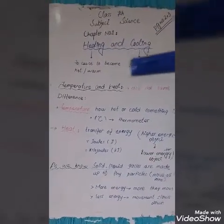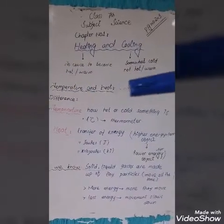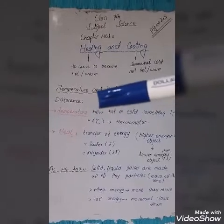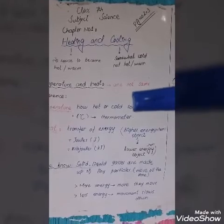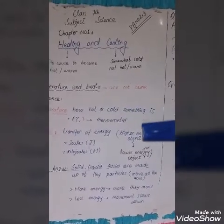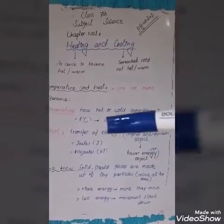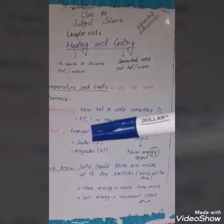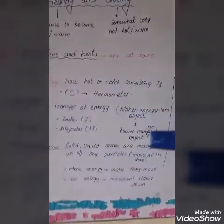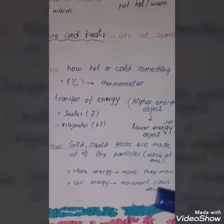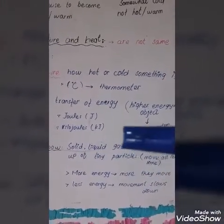Temperature is how hot or cold something is. It is measured in degrees Celsius and measured by a thermometer. Heat is the transfer of energy from a high-energy object to a low-energy object. Its units are joules (J) and kilojoules (kJ). As we know, solids, liquids, and gases are made of tiny particles. They move all the time, but if the energy is high, they move more.